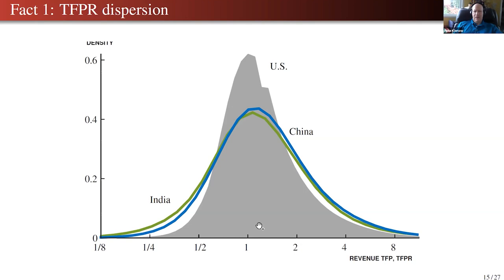There's more dispersion in China and India. These differences are a big deal because these are like a factor of four — firms that have twice the average and half the average. That can lead to big differences in aggregate output if this dispersion truly reflects misallocation. If these are state-owned enterprises in China with really low TFPR and private ones starved for inputs with really high TFPR, there could be a huge gain from reallocating inputs from low to high marginal product firms.